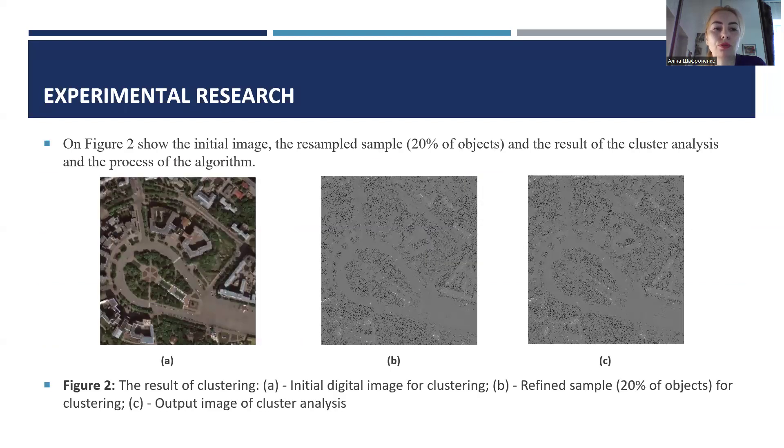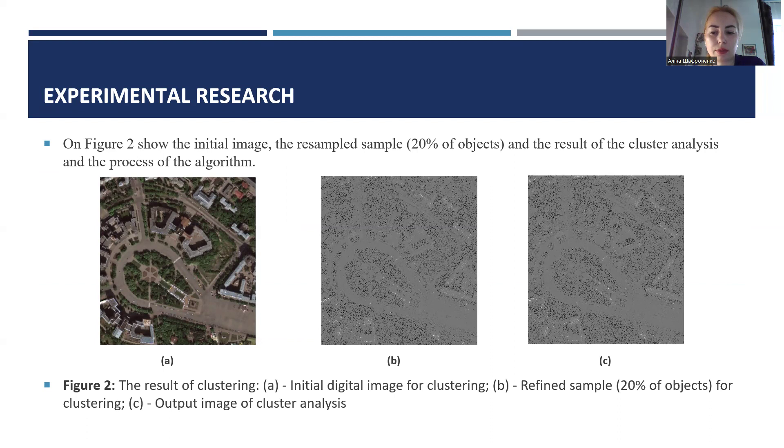On Figure 2 shows the initial image, the assembled sample, and the result of the cluster analysis and the process of the algorithm. The first picture is the initial digital image for clustering. The second, the refined sample for clustering. And the C image, the output image of cluster analysis.